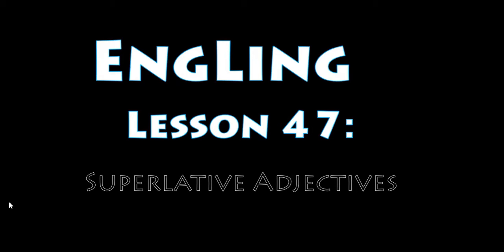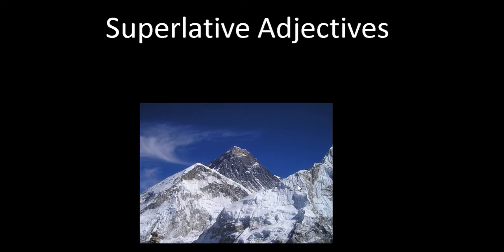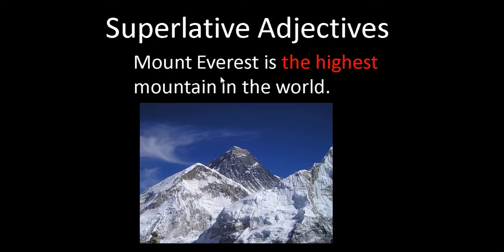Hello everyone, welcome to EngLing lesson 47 on superlative adjectives. What is a superlative adjective? Let's learn by example. Here is a mountain — a very famous mountain. Its name is Mount Everest. Mount Everest is so famous because it is the highest mountain in the world.